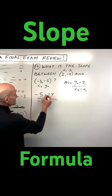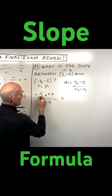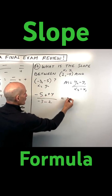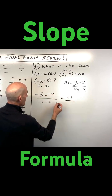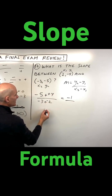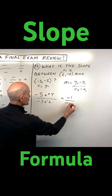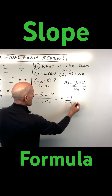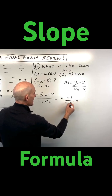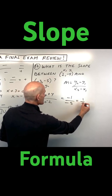When you subtract, it's like adding the opposite. So negative 5 plus 4 is negative 1. Again, when you subtract, it's like adding the opposite. So negative 3 plus negative 2 is negative 5. And a negative divided by a negative is a positive one fifth.